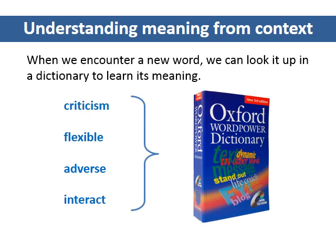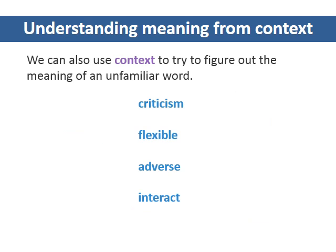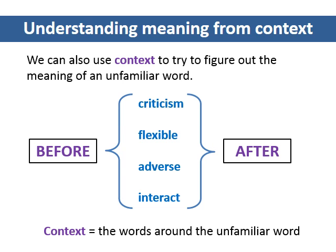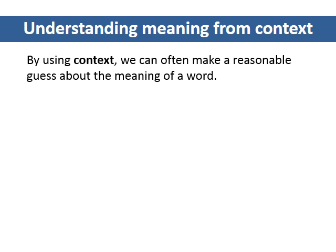When we encounter a new word, we can look it up in the dictionary to learn its meaning. We can also use context to try to figure out the meaning of an unfamiliar word. The context of a word is the other words that come before and after it in the sentence. We can also use other sentences that surround the word. By using context, we can often make a reasonable guess about the meaning of a word. This can help us be more effective listeners and readers.